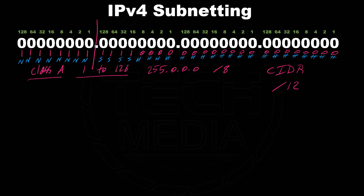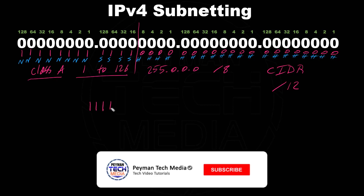Our new cut line is now at position 12. Originally it was at position 8 based on the default subnet mask, but with the CIDR notation of /12, we now have 12 bits for the network. The first 8 bits are the network bits, and those 4 additional bits are the subnet bits. To find the number of subnets, the subnet bits always go consecutively from left to right.